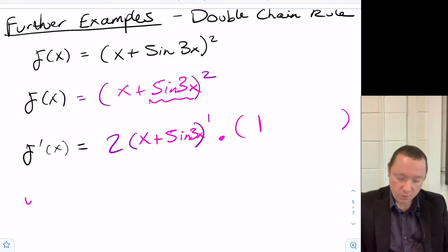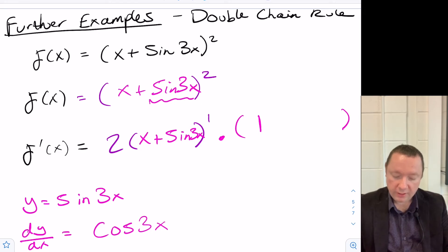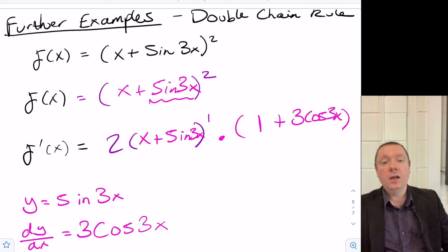But you've got this sine 3x. If we just do that at the side, let's say y equals sine 3x, then dy/dx would be cos 3x. But then we've got an inner function here, so we need to differentiate that to get 3. So it would be 3 cos 3x. So I've got 1 plus 3 cos 3x. I've essentially had to use the chain rule twice in the same question.